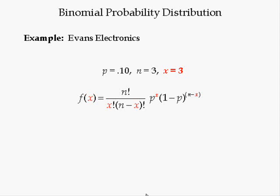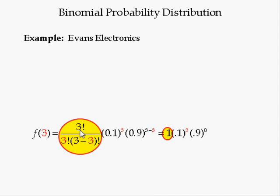Notice that X is in red font in this equation. This is done because X can be equal to 0, 1, 2, or 3. The other letters represent fixed numbers: N equal to 3 and P equal to 0.1. If three people were picked at random from the company directory, we want the probability that all three will leave the company within the next year. The first part of the binomial equation is circled in red and highlighted in yellow. It represents the number of